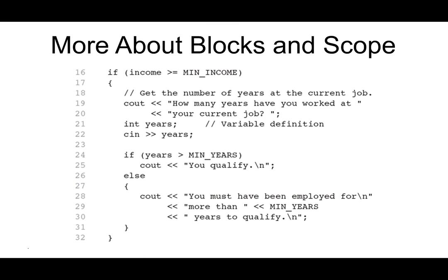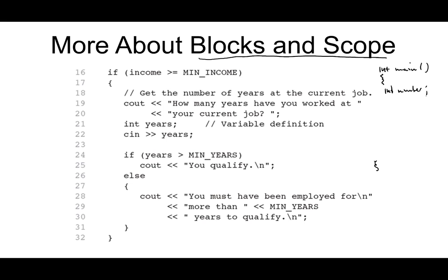So now I want to talk more about blocks and scope. Basically, scope refers to where a variable can be used in a program. So far, the variables we've seen are defined in the main function. We would say that these variables have the scope of the main function, so this would be called local scope or block scope.